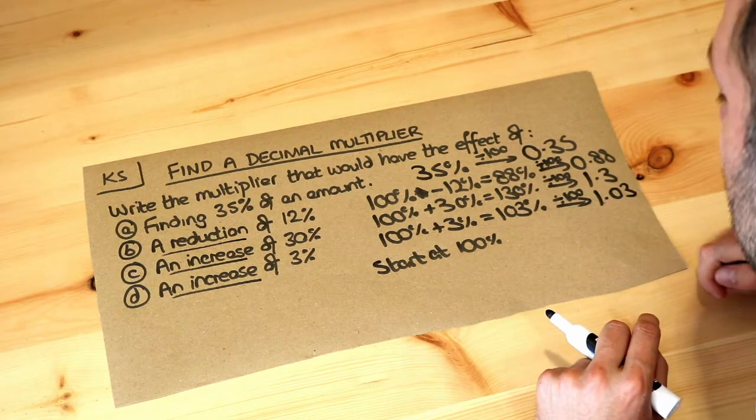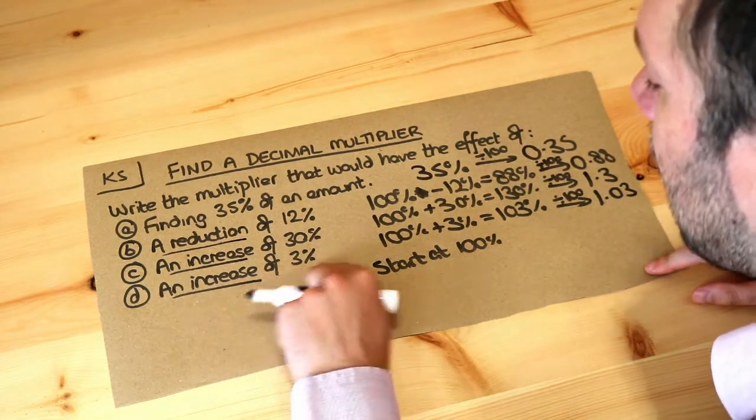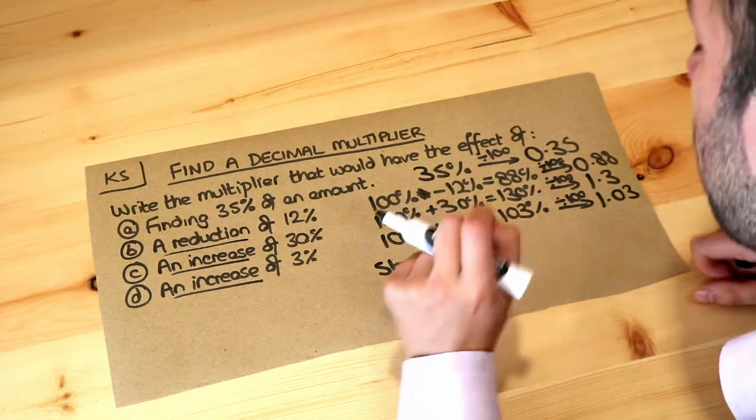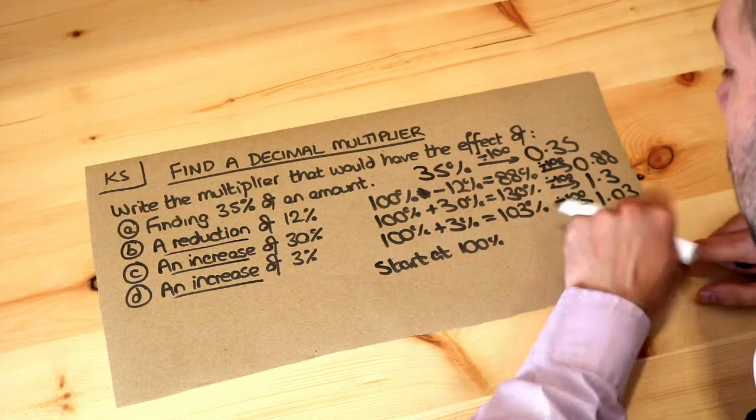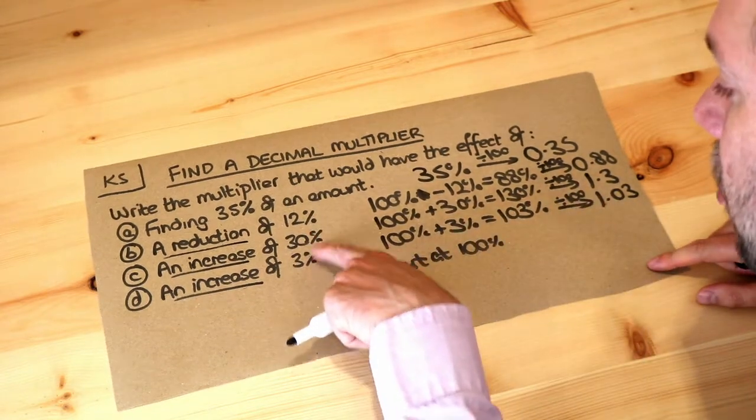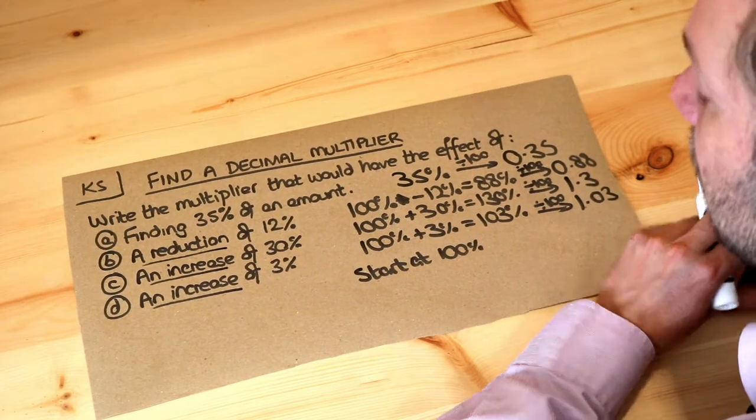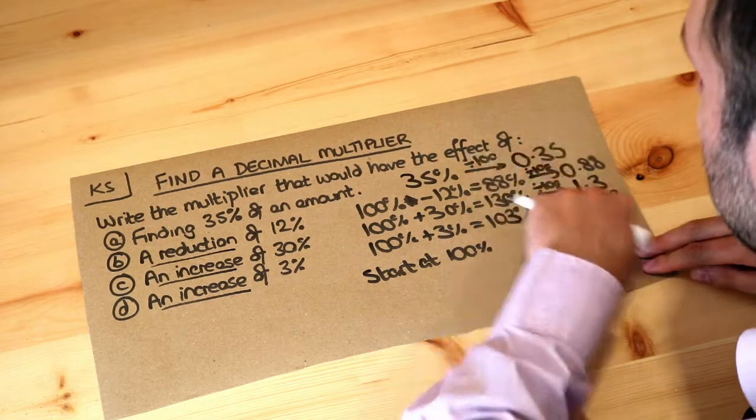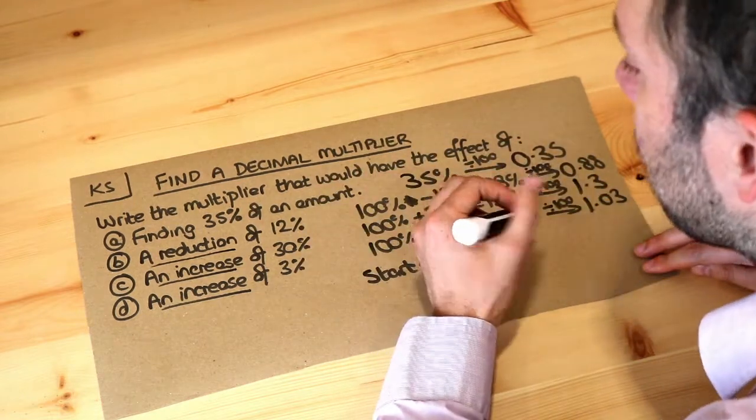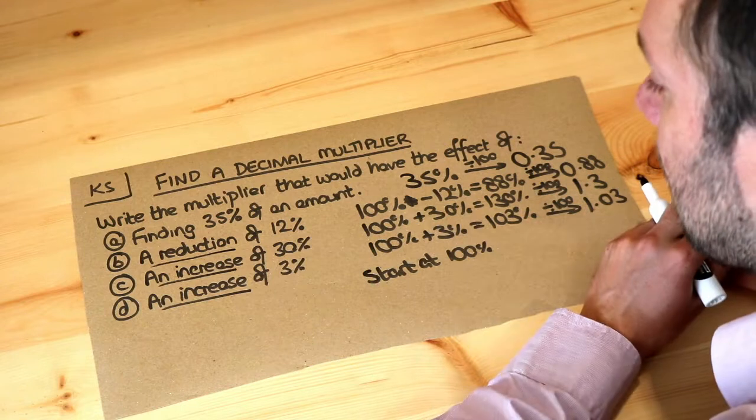That's a common mistake that students make. They think to represent an increase of 3%, you times by 1.3 rather than 1.03. So do consider the difference between these two questions and the two decimal multipliers. And in subsequent videos we'll see how we can use decimal multipliers to find a percentage of an amount or increase or decrease a value by some percentage.